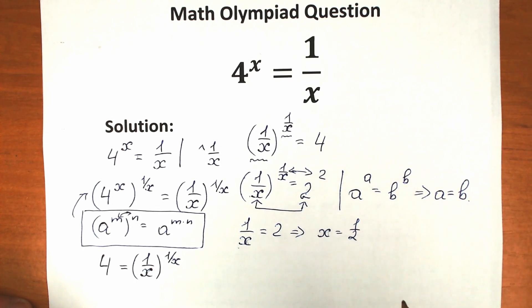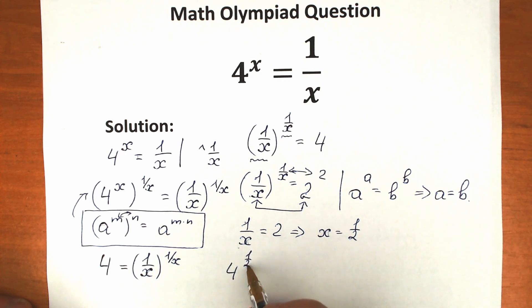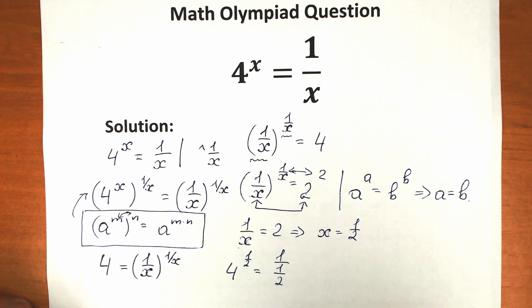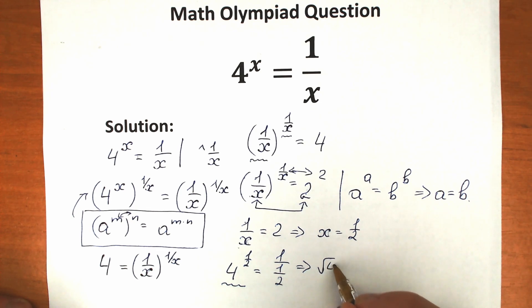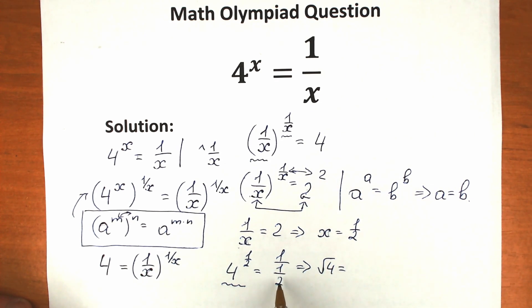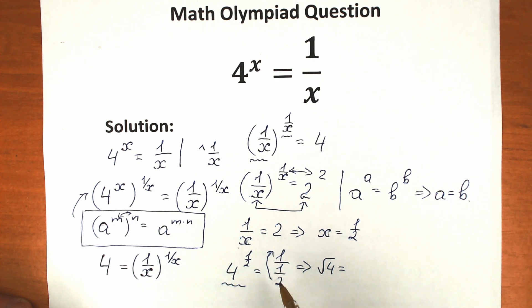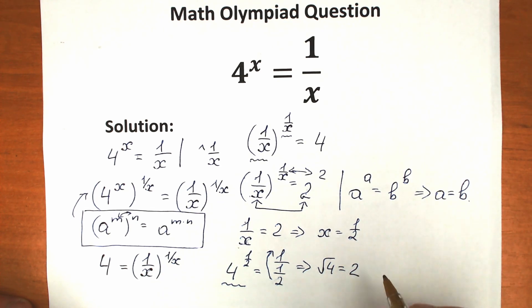We can easily check this root. We have 4 to the power 1 half equal to 1 over 1/2. So 4 to the power 1 half gives us the square root of 4, which equals 2. And 1 over 1/2 also gives us 2, bringing the denominator to the numerator. So our correct answer is x equals 1 half.